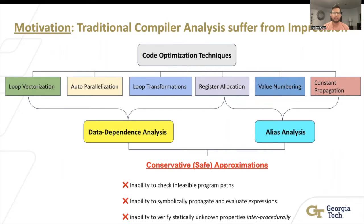For example, if you know that a is greater than zero and you have a plus b as an index for an array, you can break some of the dependencies because of the a greater than zero constraint. But currently, that's not there in the dependence analysis cases. Or inability to verify statically unknown properties interprocedurally. All three of these hinder potential optimization opportunities that can lead to high quality code.